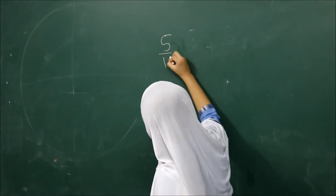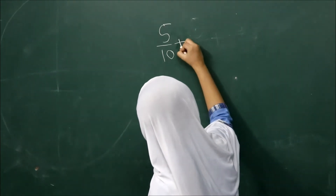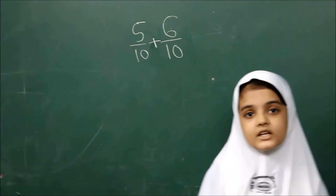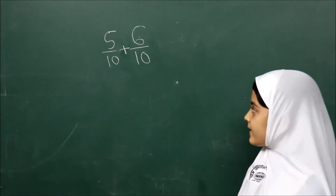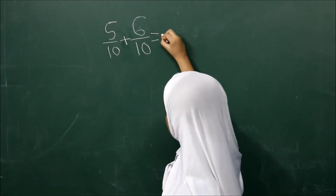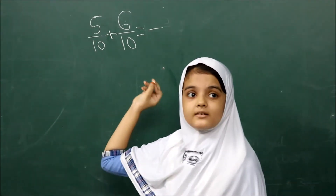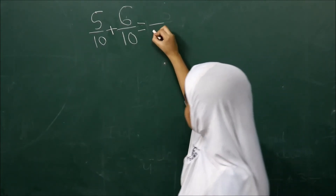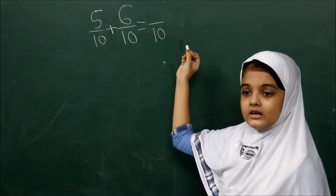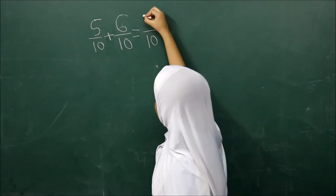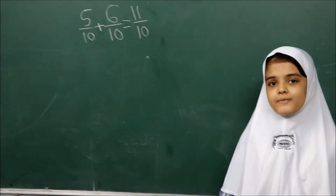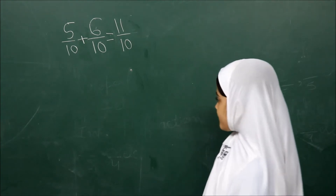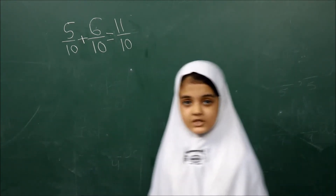Here is 5 by 10 plus 5 by 10 plus 6 by 10. I have taken a pair of like fractions, so it is easy to add. To add fractions, we copy the denominators as they are and then add the numerators: 5 plus 6 is equal to 11. Did you know which type of fraction we have got after adding? You are right — this is an improper fraction, so we need to convert it to a mixed fraction.